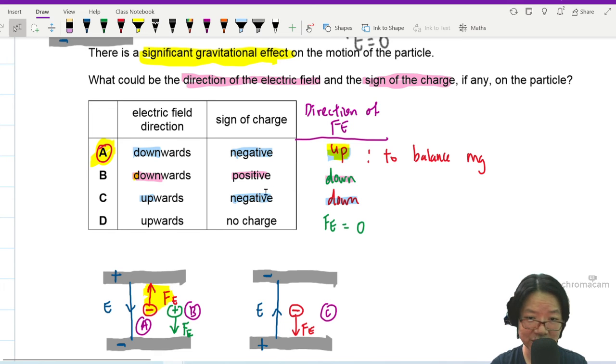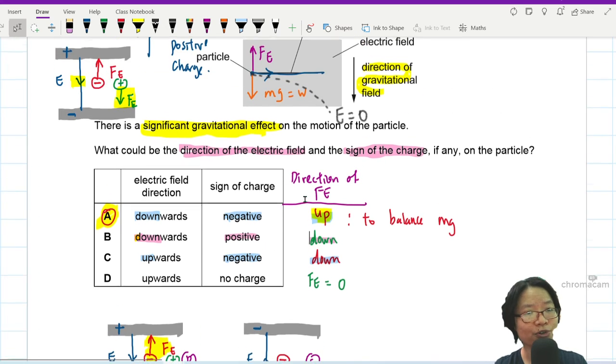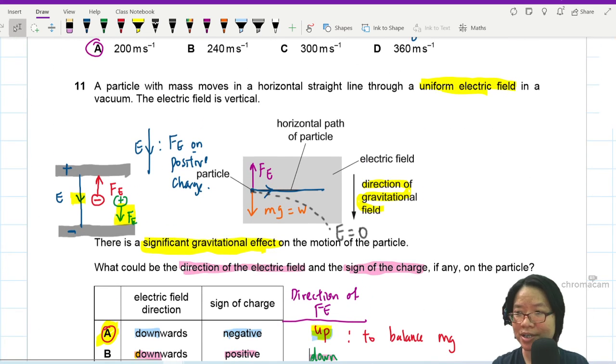So direction of E is follow direction of force on a positive charge. Negative charge, change direction. Positive charge, follow direction. Negative charge, change direction. So you can up, down, down very fast. Because downward for negative, change it to up. Downward for positive, maintain. Upward for negative, change it to down. And we are looking for an upward force. All right. So that's it for the question.